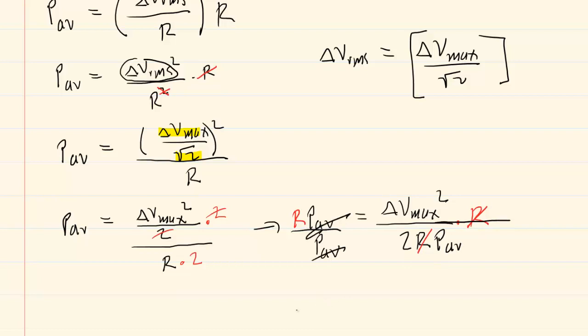So let's cancel those average powers. We finally can see that resistance is equal to delta V_max squared all divided by two times the average power. This is the equation we will be using for parts A and B.